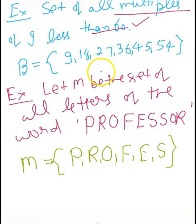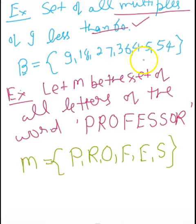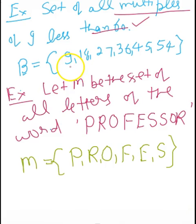Multiples of 9 are 9, 18, 27, 36, 45, 54, 63, and so on. But since we need elements less than 60, the elements are 9, 18, 27, 36, 45, and 54. These are written within curly braces, so set B is written in the roster form.